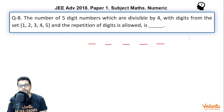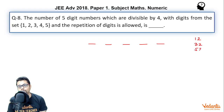Since repetition is allowed, the valid two-digit endings are: 12, 32, 52, 24, and 44.